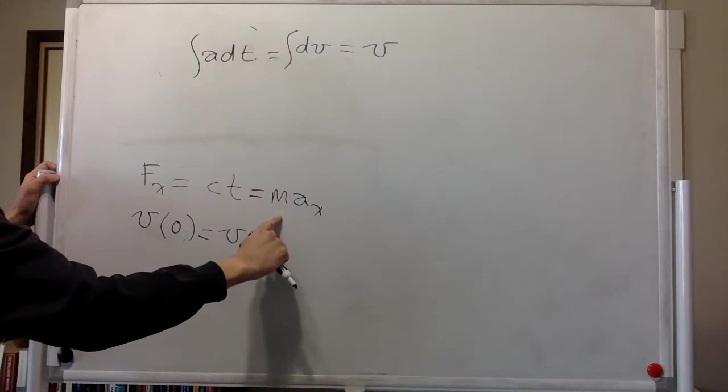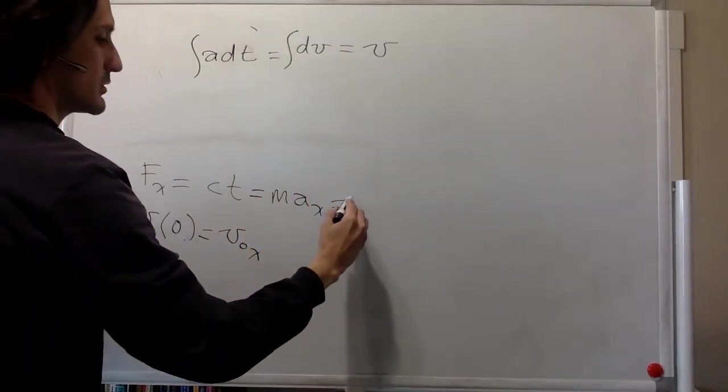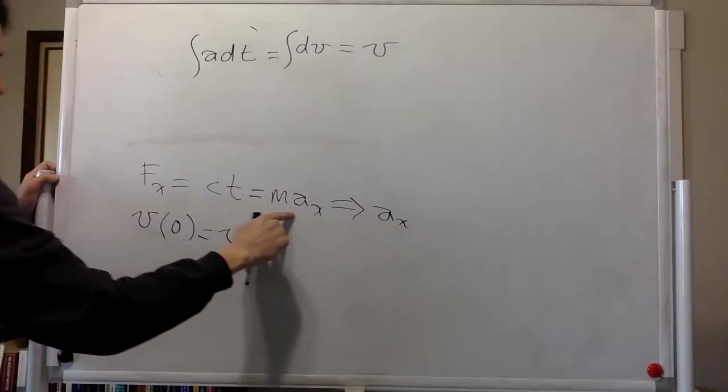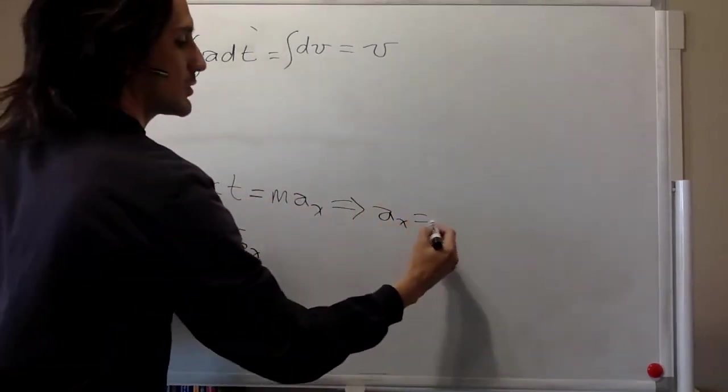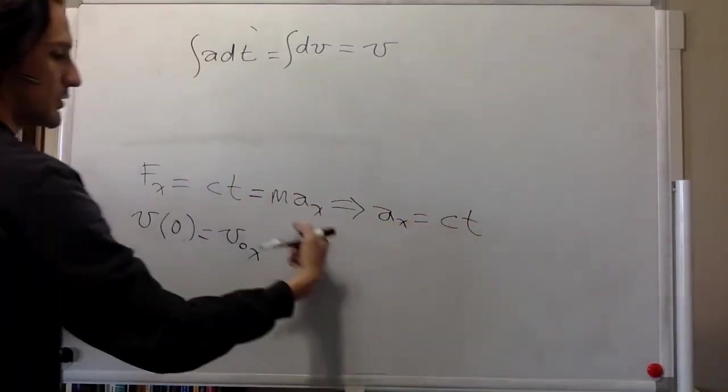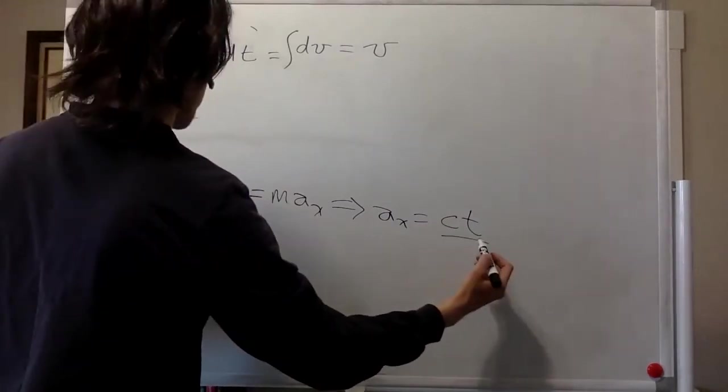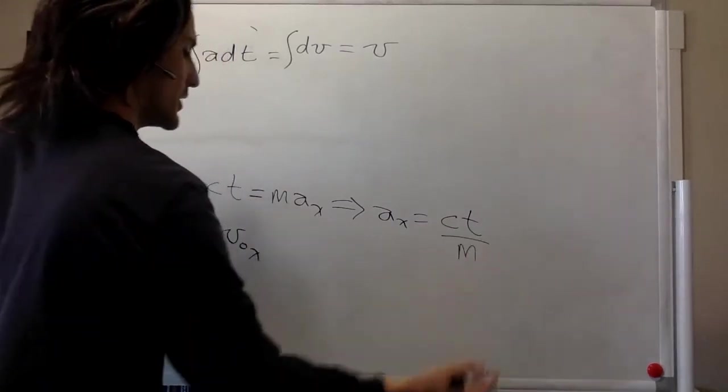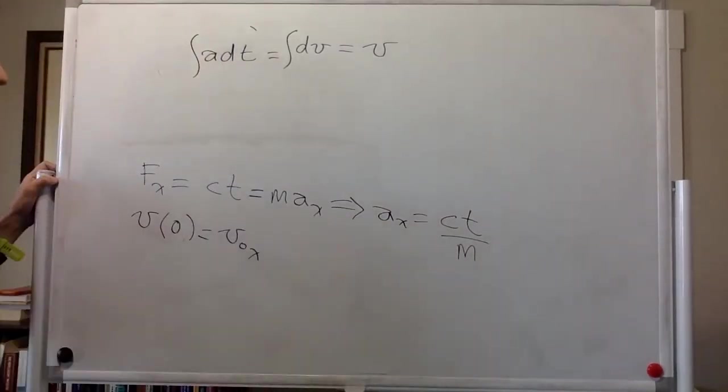And from here, we can see that the acceleration in x is equal to ct, which is the force divided by mass. So that's the acceleration, force divided by mass.